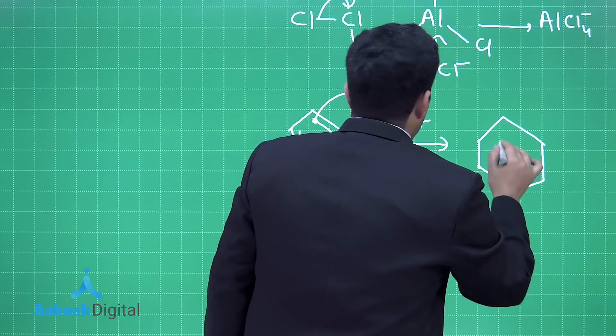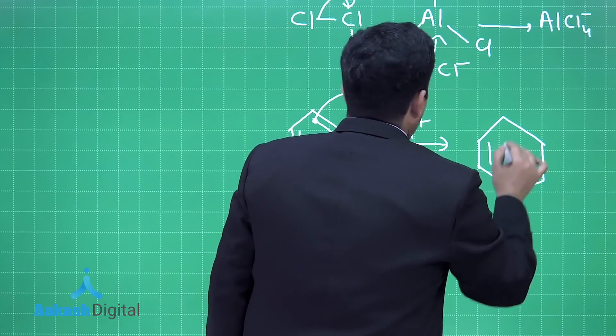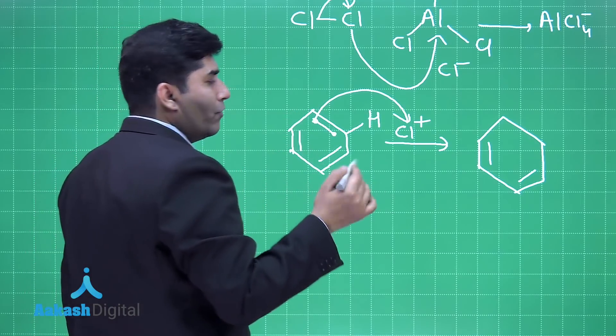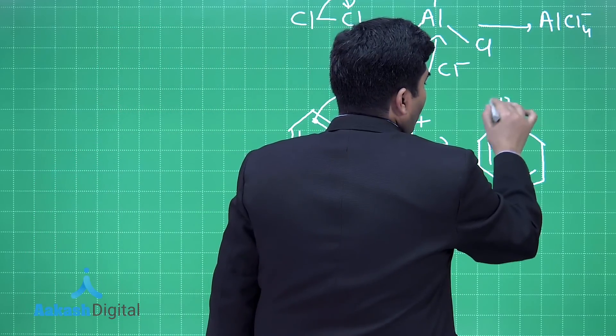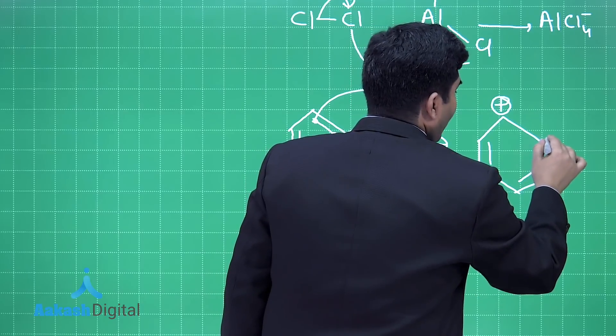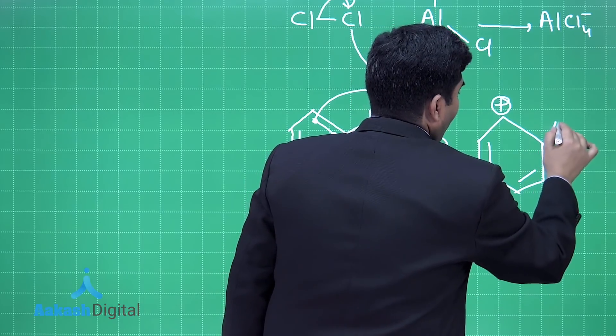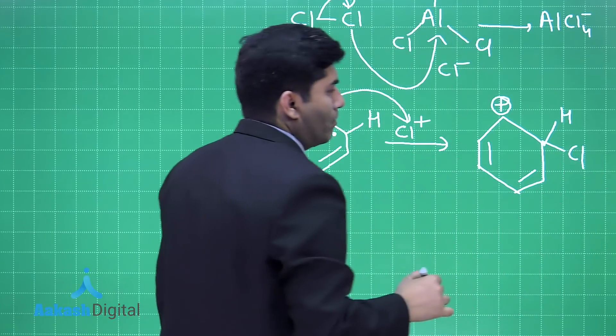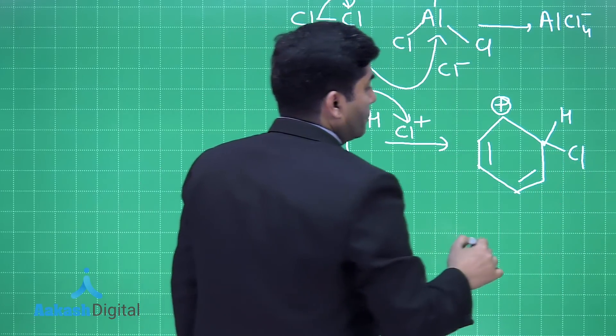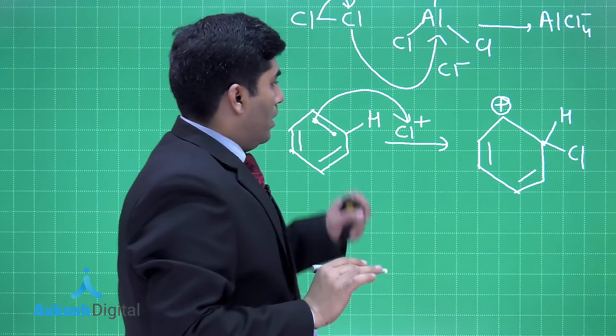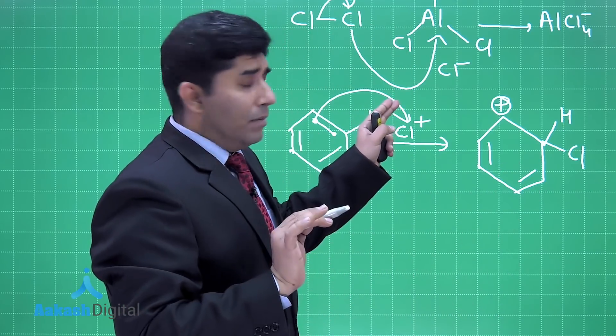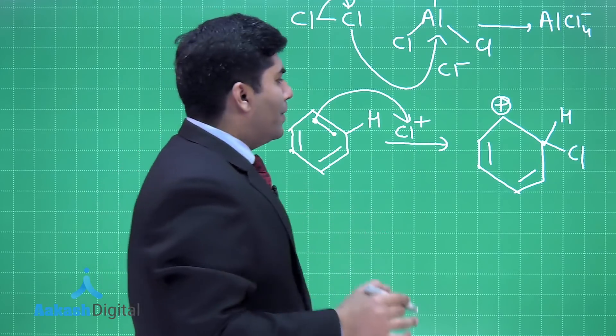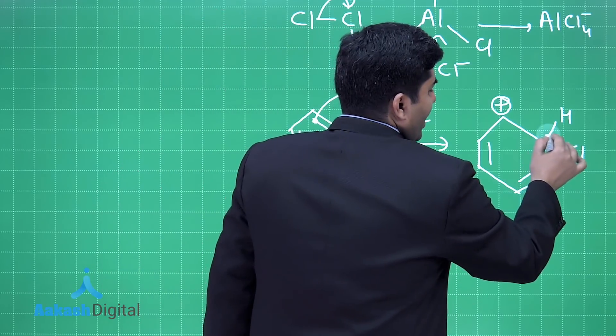This carbon at the top is losing one electron, that's why a positive charge is there. The carbocation will form and this carbocation is known as sigma complex. So this is sigma complex.